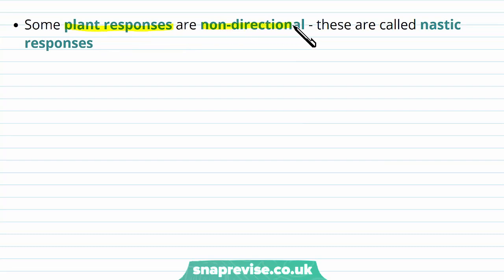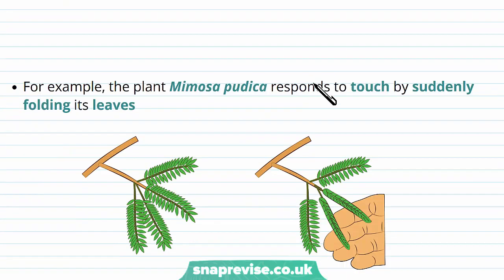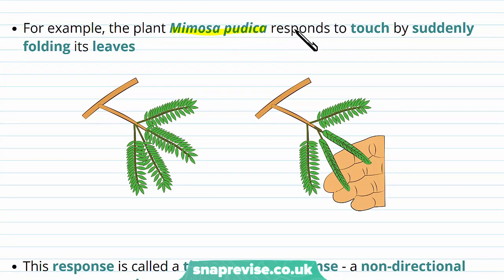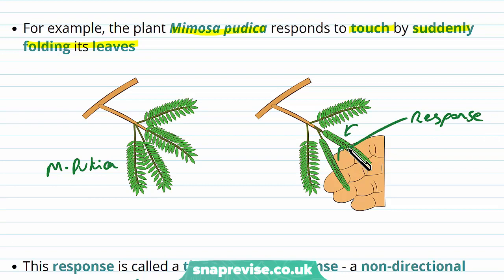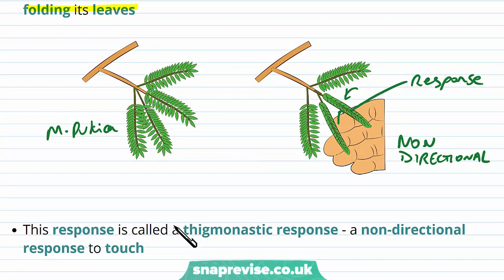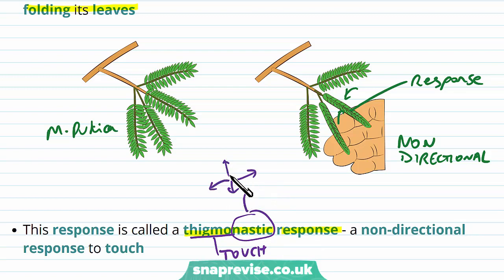Some plant responses are non-directional, and these are called nastic responses — not tropic (direction-based) but nastic, meaning there is no specific direction. An example is Mimosa pudica, which responds to touch by folding up its leaves regardless of where it is touched. This is called a thigmonastic response — thigmo referring to touch, nastic meaning the response has no particular direction. If it were directional it would be thigmotropic.